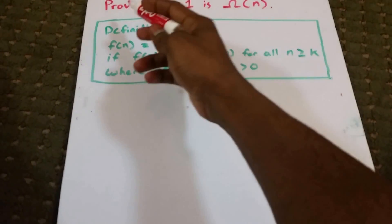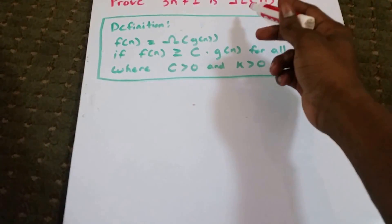Hello YouTube. This is a video to prove that 3n plus 1 is big omega of n.